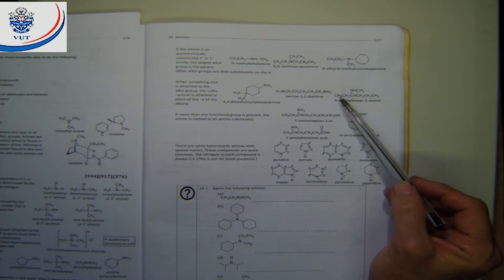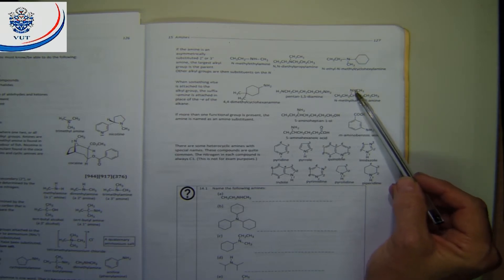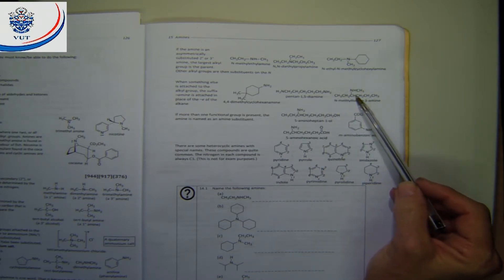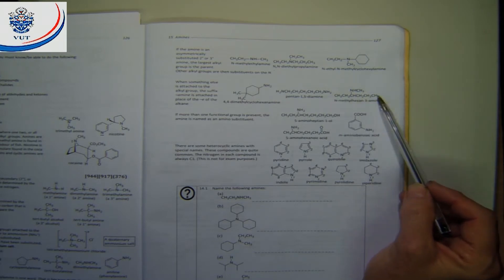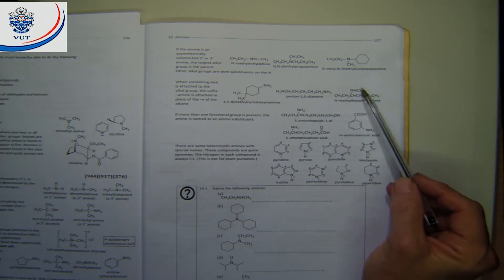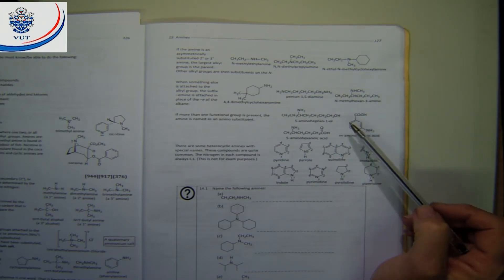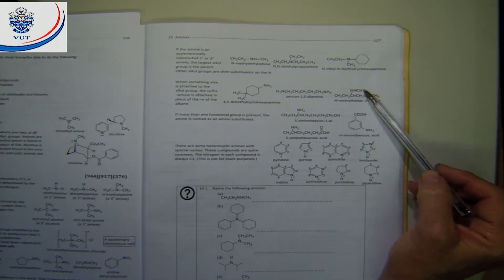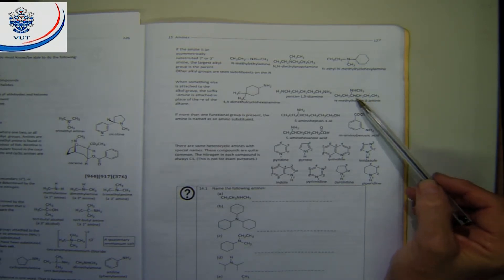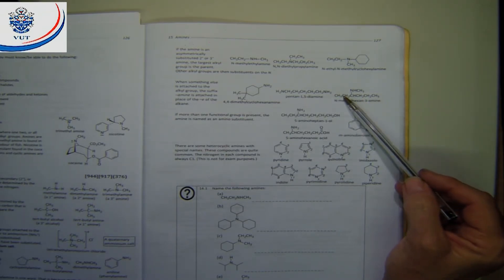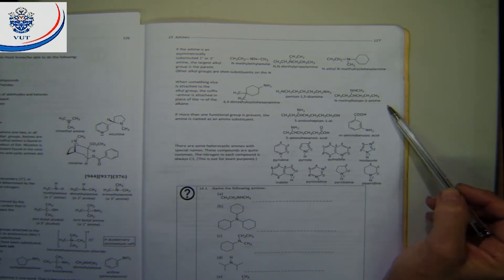In the next example, we have a methyl group on the nitrogen itself, and the amine is attached to a long chain. The longer chain is the parent. On the nitrogen there is another substituent — the short methyl group. So you say N-methyl, and then for the parent chain, counting to find the amine: position one, two, three — so it's N-methylhexan-3-amine.